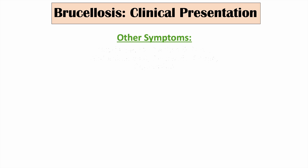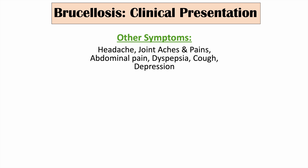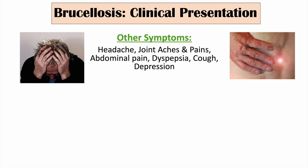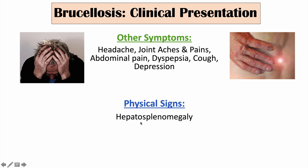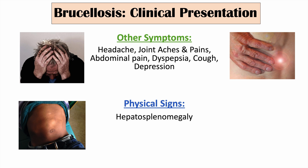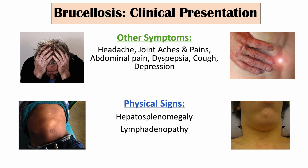Other symptoms of brucellosis include headache, joint aches and pains, abdominal pain, dyspepsia (indigestion), cough, and depression. Important physical signs include hepatosplenomegaly — an enlarged liver and spleen, often due to infiltration of the spleen — and lymphadenopathy, which refers to enlarged, tender lymph nodes.